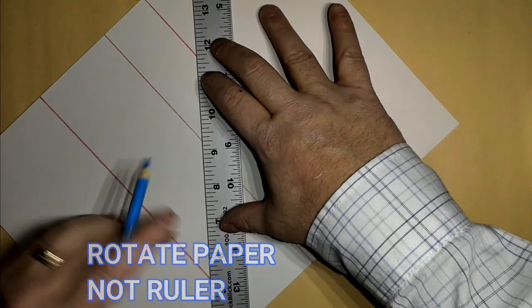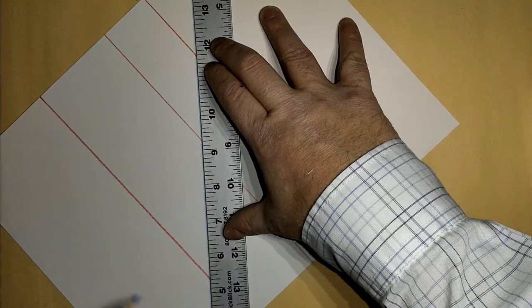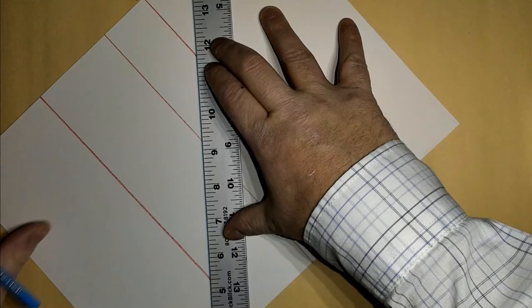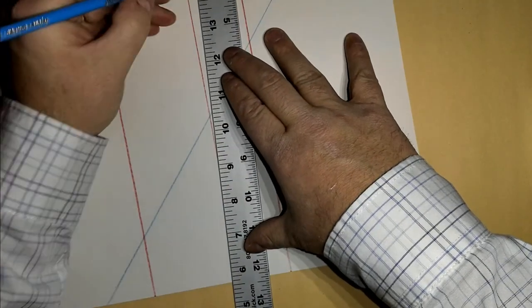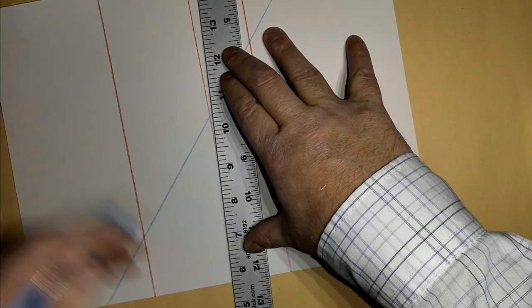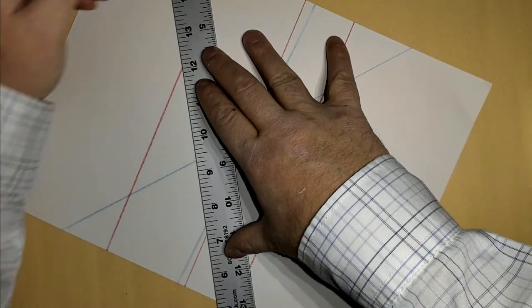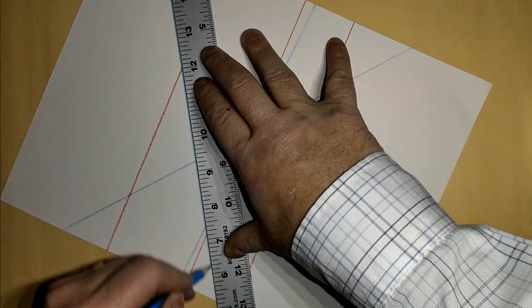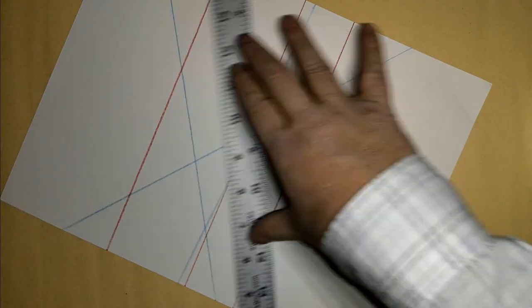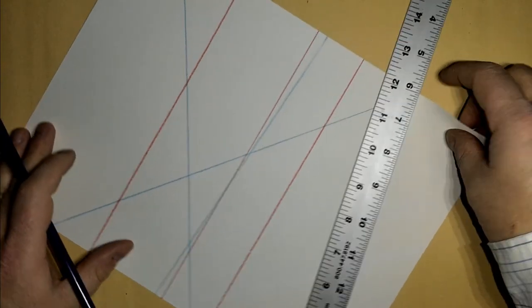Hold it, two fingers and a thumb, go all the way down, rotate my paper, and I just made three lines right there. Rotate my paper.